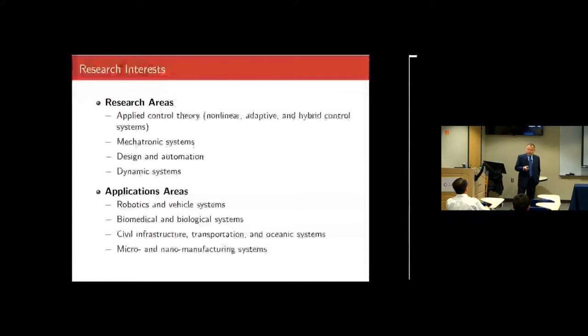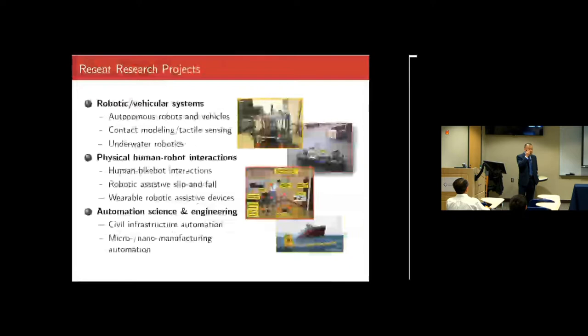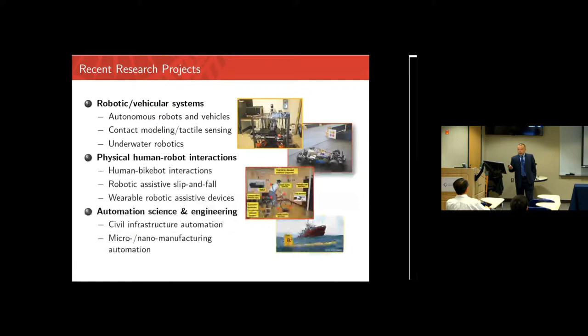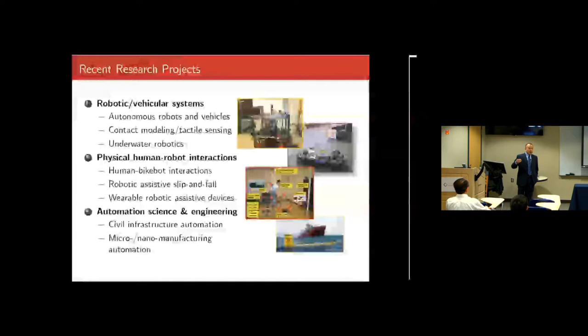Just a few overviews of my recent research projects. Primarily I have three major areas: robotic vehicle systems including autonomous vehicles, robots, and underwater robots — I'm working with marine scientists at Rutgers. Another area is physical human-robot interactions, which is the topic I'll talk about today — the human-bike-bot interactions. We're also working on wearable robotics for sleep and floor projects. The third area is automation science and engineering — civil infrastructure systems and micro-nano manufacturing.